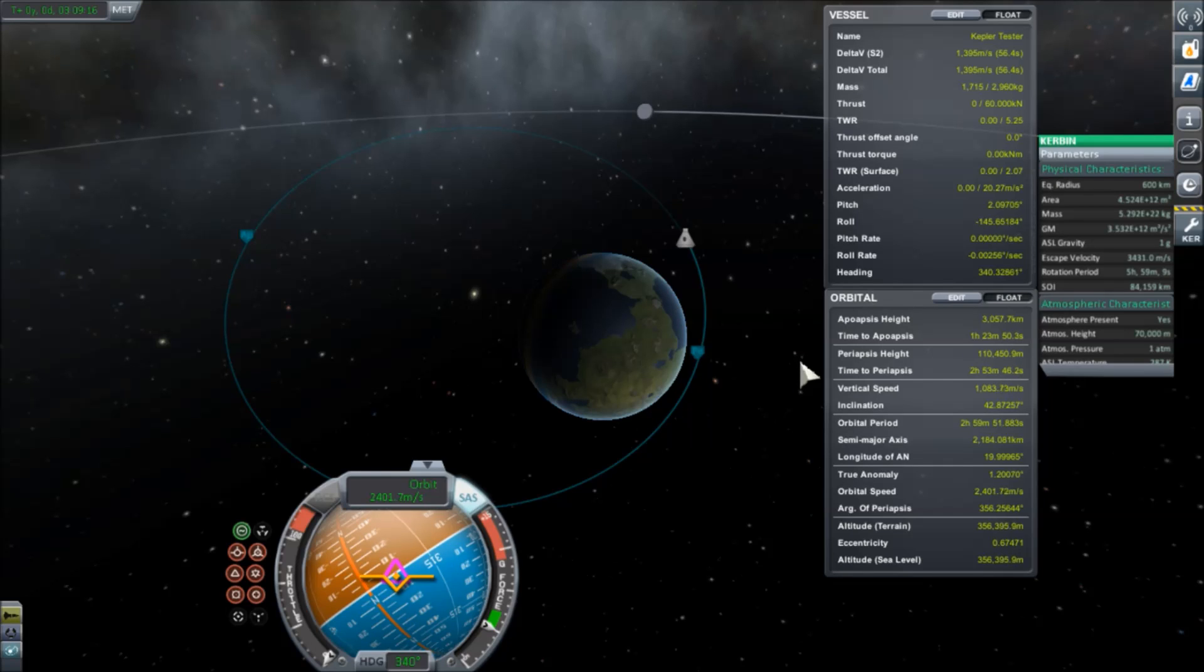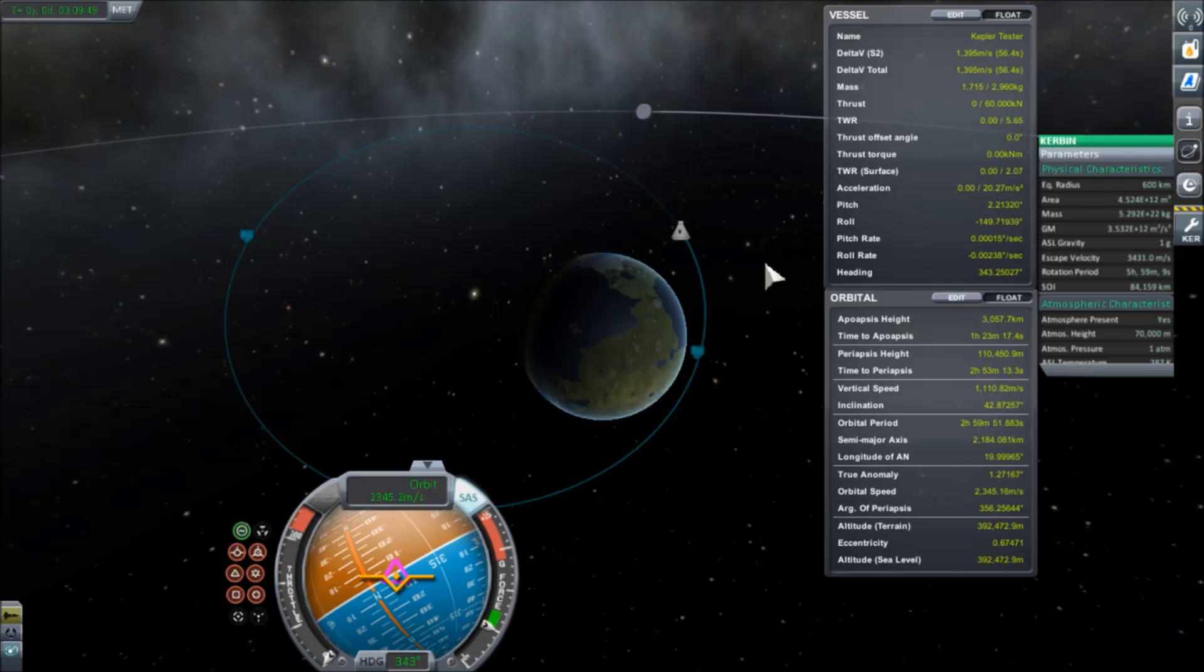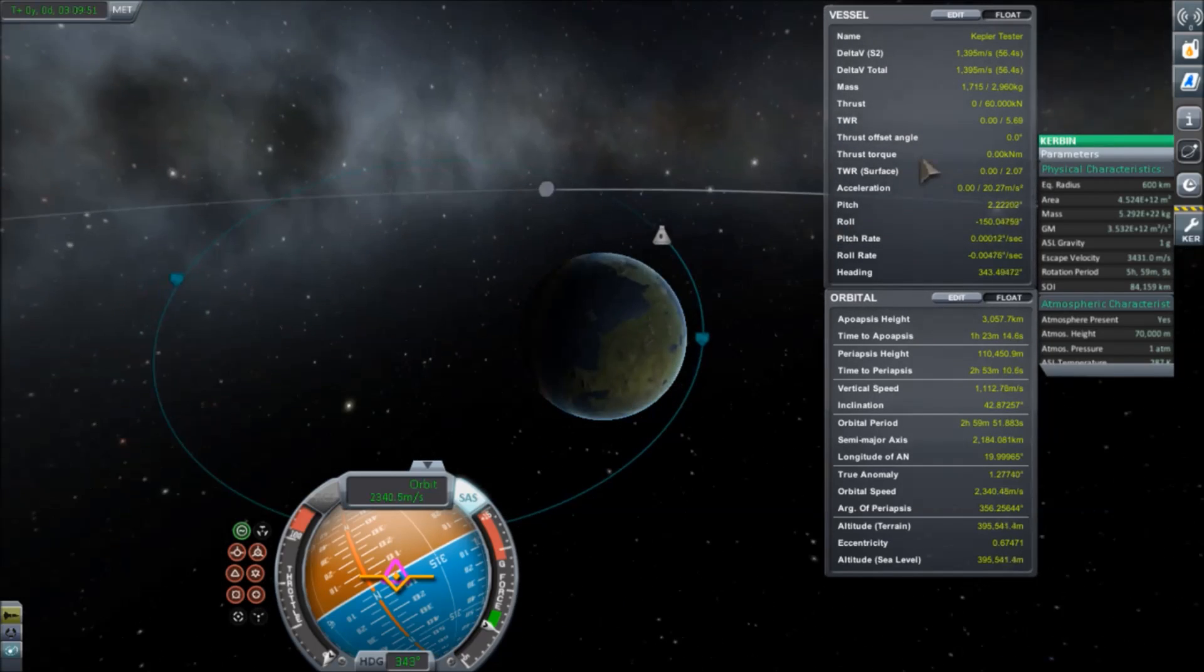If we add these two distances, 3,657.7 plus 710.4, we get 2a, and 2a is 4,368.1 kilometers. Divide by 2. And yeah, we get 2,184.05 kilometers. It's a little bit off just because of the rounding error, but good enough. So hopefully that convinces you that Kepler's first law is at work in KSP.